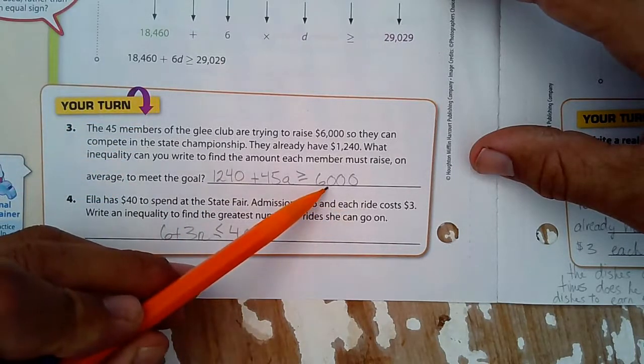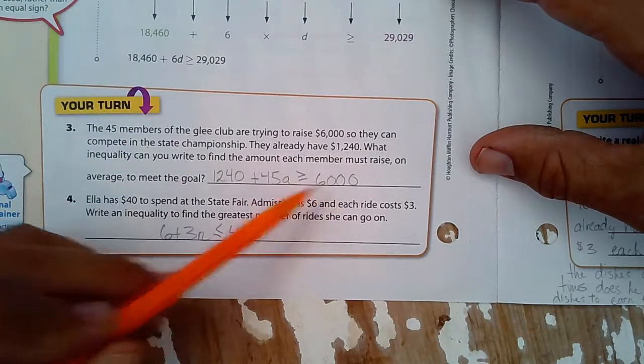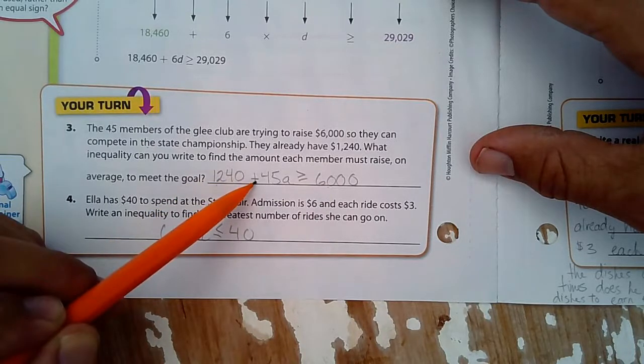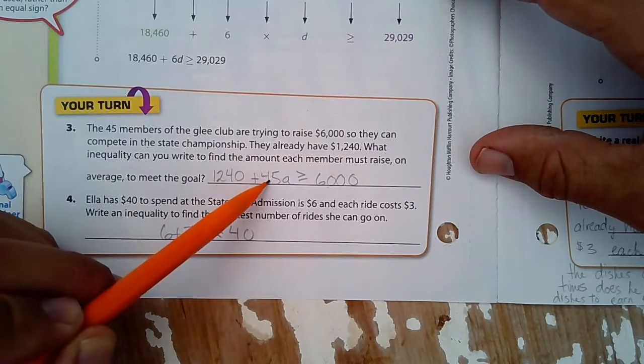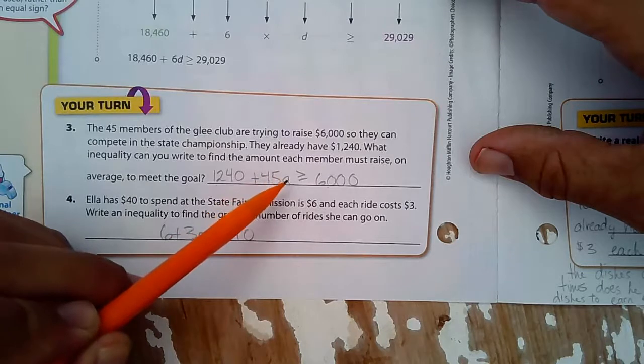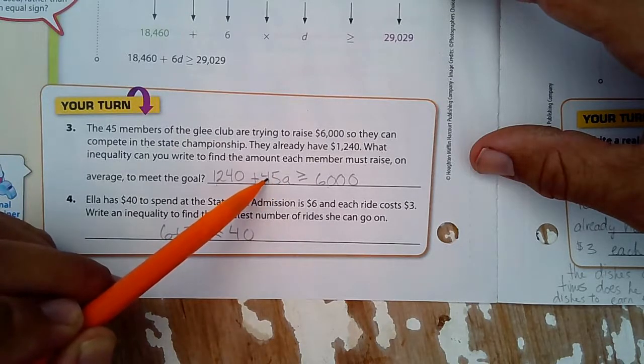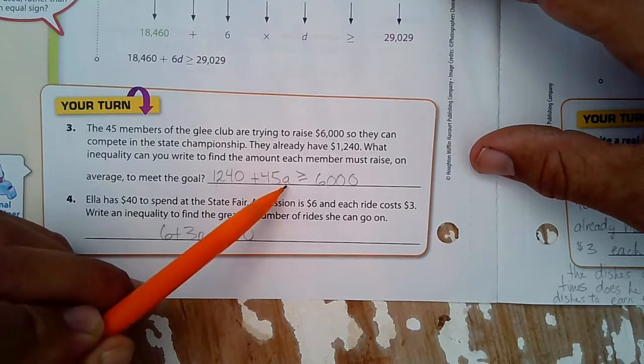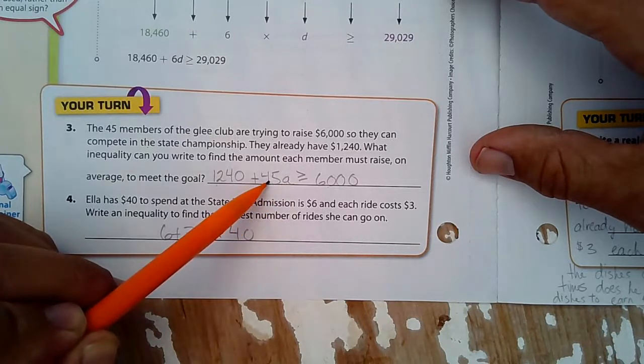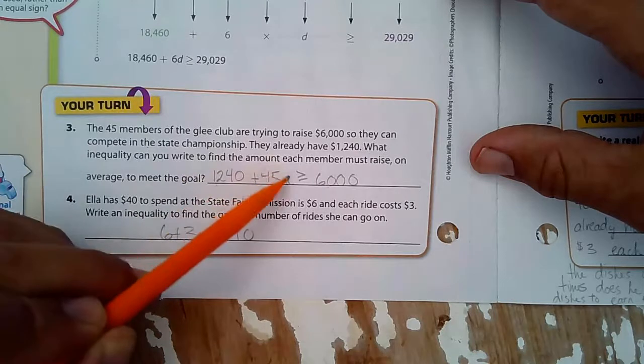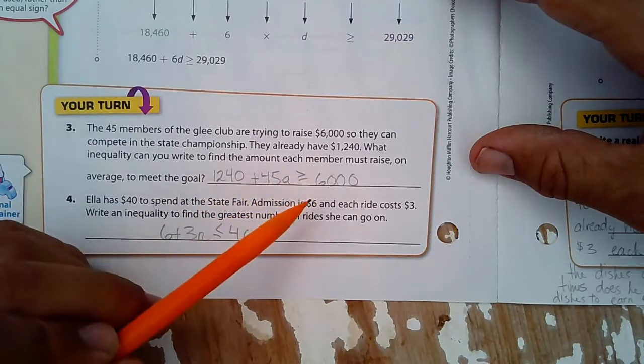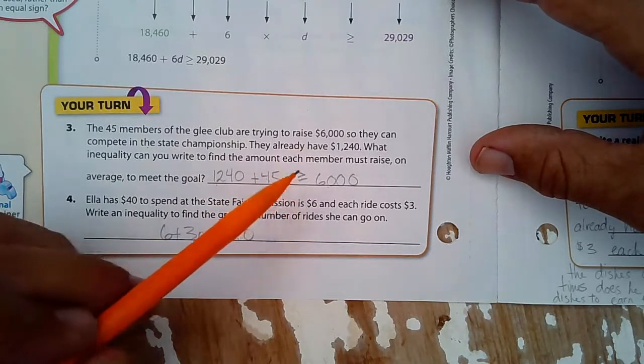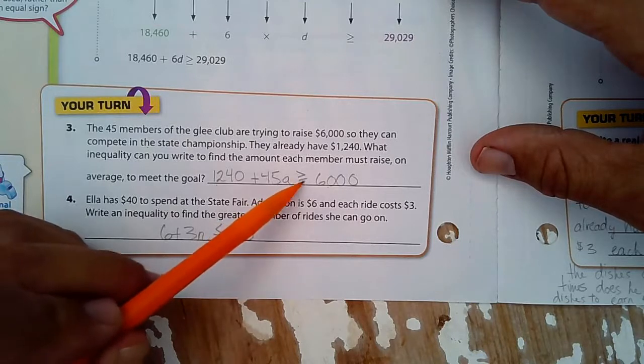What inequality can you write to find the amount each member must raise on average to meet the goal? Okay, you've got to get $6,000. That is our target. We start with this, and we have to add 45 for each member. So there are 45 members. How much? This is the amount, A probably for amount, for each of those members. And all this has to be greater than $6,000 to meet that target, or it could be $6,000 also. So that's why we write the little line there for equal to.